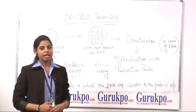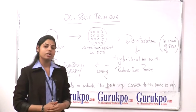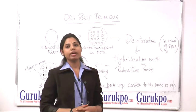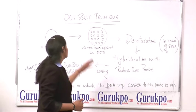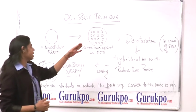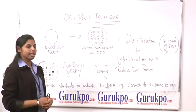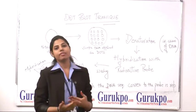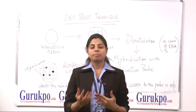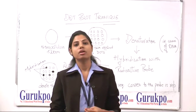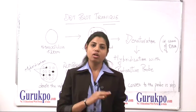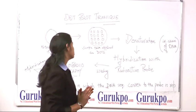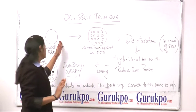There are various techniques in recombinant DNA technology. Today we are going to talk about dot blot technique. In this technique, we have to identify the main sequence of individual or any type of tissue through these filters.